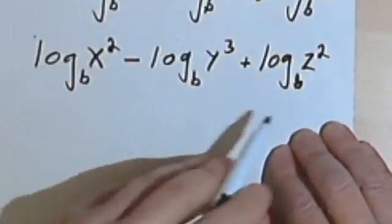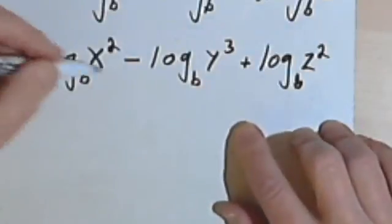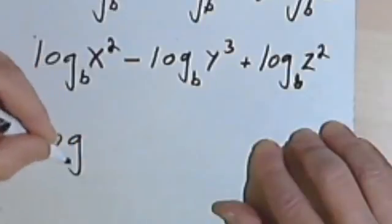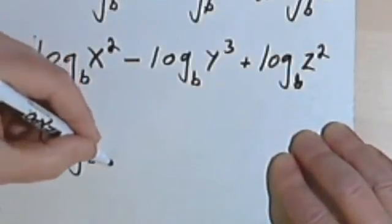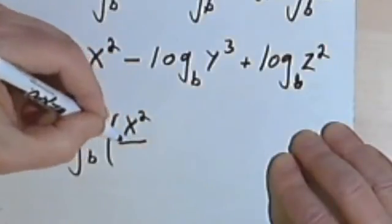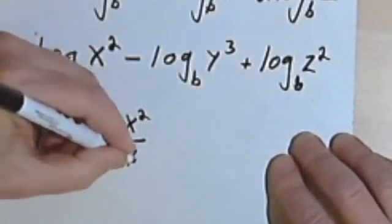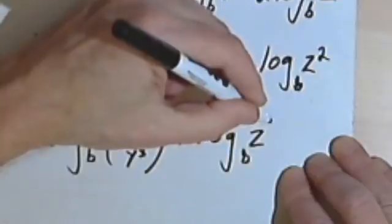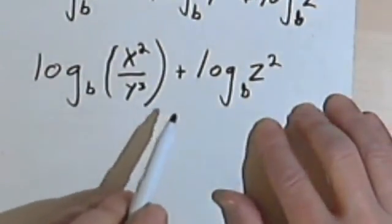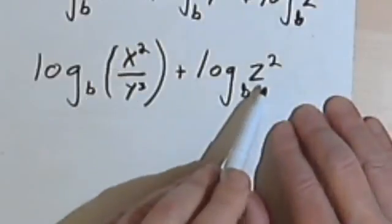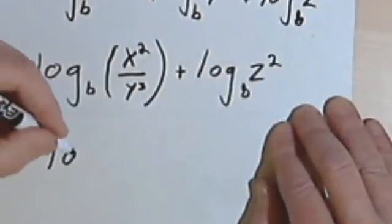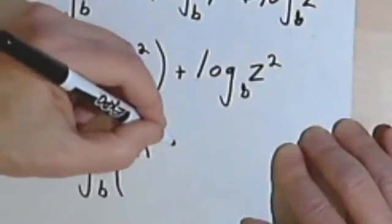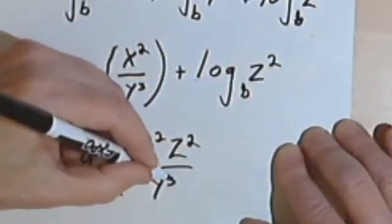Now I can start combining these into one single logarithm. I'll take the first two: log base b of x squared minus log base b of y to the third, and use the quotient property to rewrite that as log base b of the fraction x squared over y to the third. I still have to add the log base b of z squared, so I'll use the product property and multiply x squared over y to the third times z squared, giving log base b of x squared times z squared over y to the third.